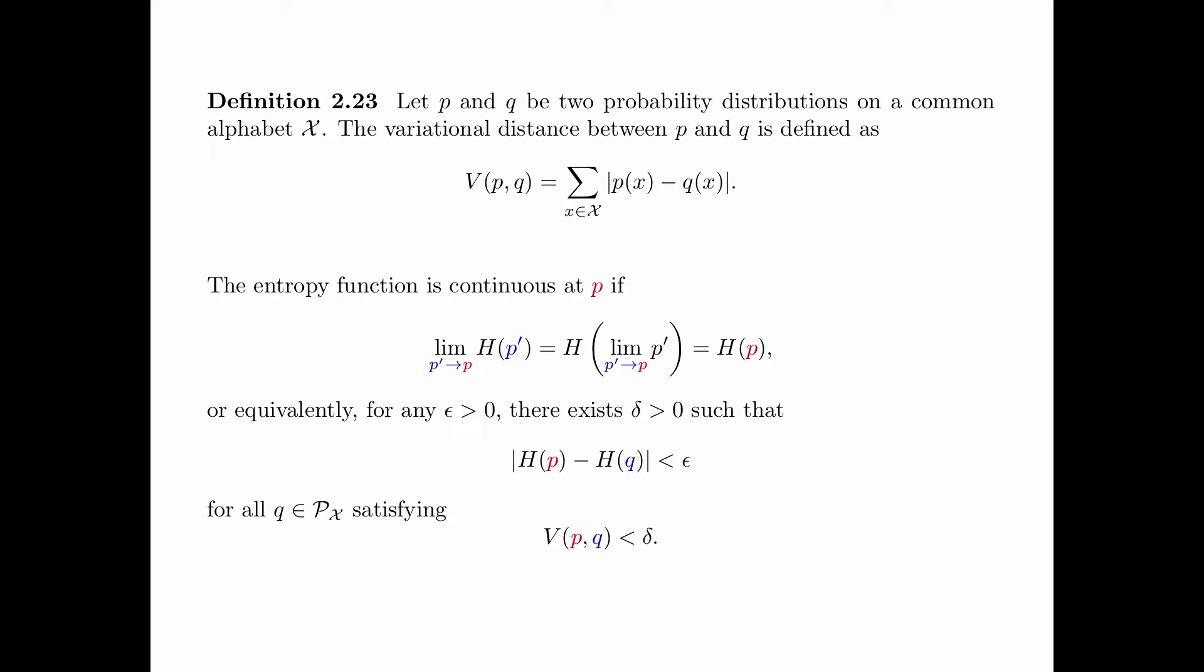Or equivalently, for any epsilon bigger than 0, there exists a delta bigger than 0 such that the absolute difference between H(p) and H(q) is less than epsilon for all q satisfying V(p,q) is less than delta. In other words, as long as q is sufficiently close to p in variational distance, the difference between H(p) and H(q) is less than epsilon.